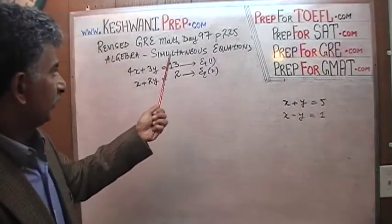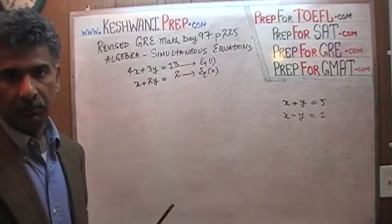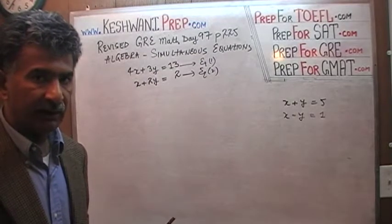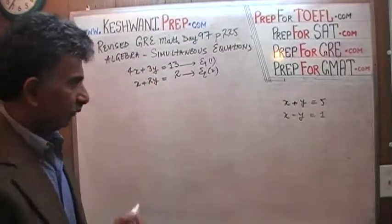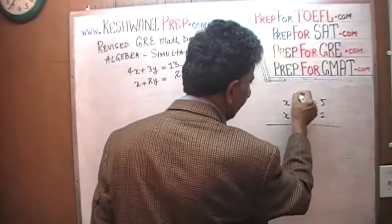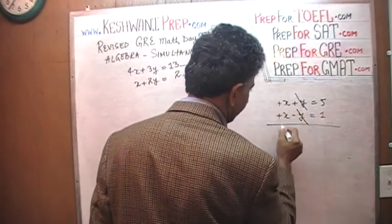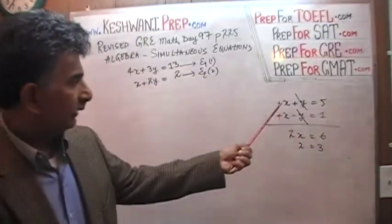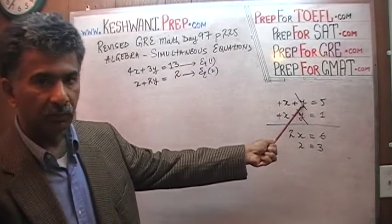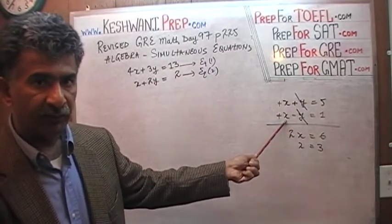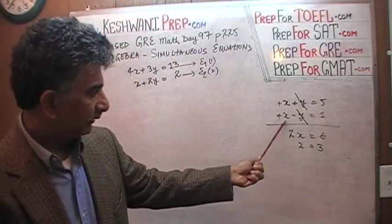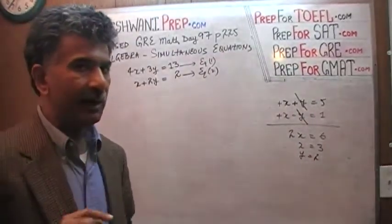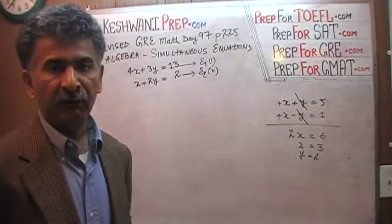This is why these equations are called simultaneous equations — whatever value x and y have must satisfy not just one equation or the other, but both of them. For example, if you add up the two equations, positive y drops out with negative y, and positive x plus positive x gives us 2x equals 6, therefore x equals 3. If x equals 3, then 3 plus 2 equals 5, so y must be 2. Those values also satisfy the second equation: 3 minus 2 equals 1. x is 3 and y is 2.